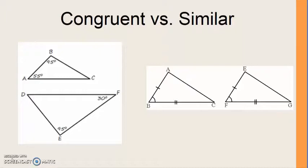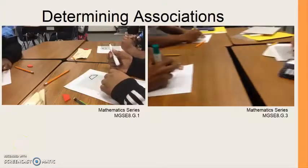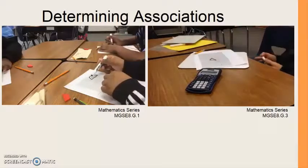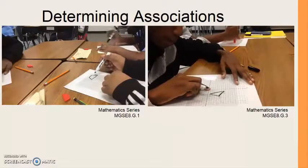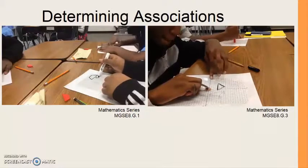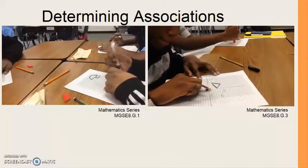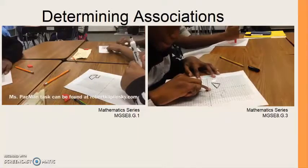Similarity as it relates to transformation is defined as a rigid motion followed by a dilation. In the mathematics series videos for MGSE8G1 and MGSE8G3, students concluded rigid transformations such as translations, reflections, and rotations produced congruent figures, and including dilations or non-rigid transformations produce similar figures.